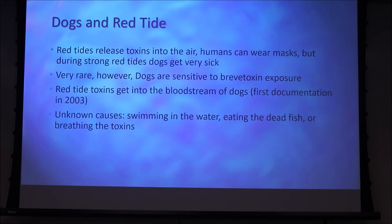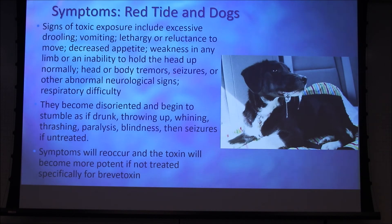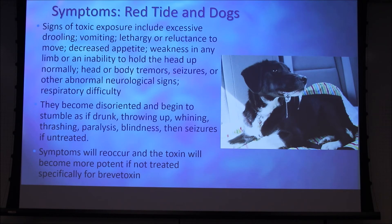When these dogs were first found sick, veterinarians thought they had regular poisoning, not brevetoxin specifically. So they were treating them as if they had eaten something bad rather than treating for brevetoxin. They were giving them IVs, which were not helping. The signs of brevetoxin exposure in dogs include excessive drooling, vomiting, lethargy or reluctance to move, decreased appetite, weakness in any limb or inability to hold up their head, body tremors, and seizures.